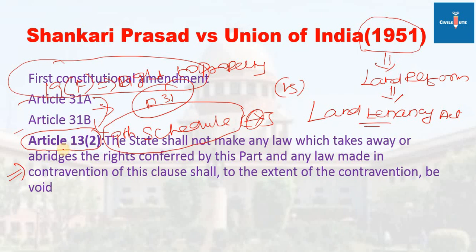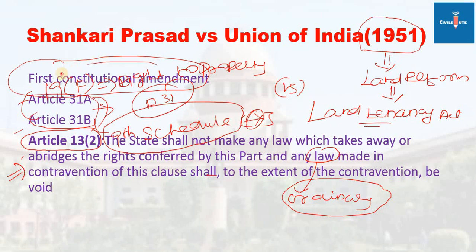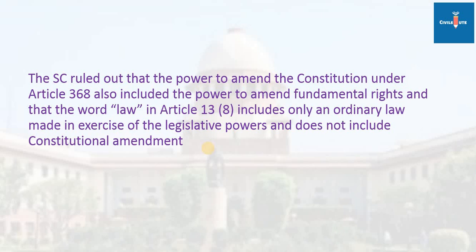The Supreme Court gave its judgment stating that a constitutional amendment act and an ordinary law are different. The Supreme Court held that the word 'law' in Article 13 includes only an ordinary law made in excess of legislative power, and does not include a constitutional amendment act. Therefore, constitutional amendments that affect the right to property are valid and not covered by Article 13.